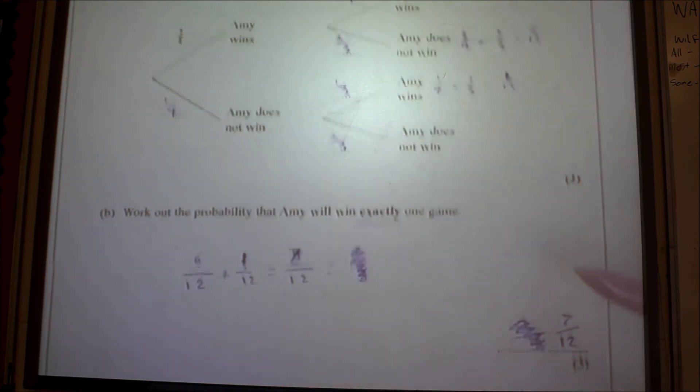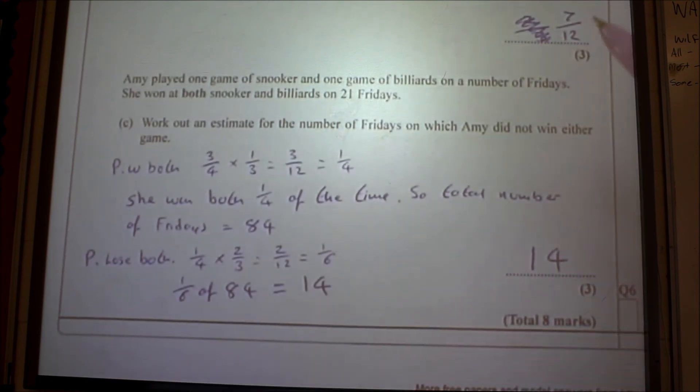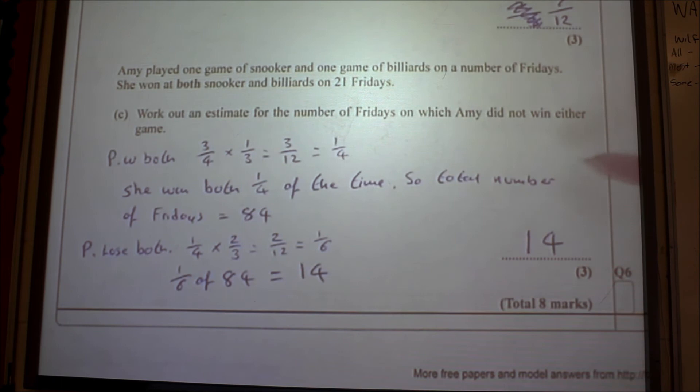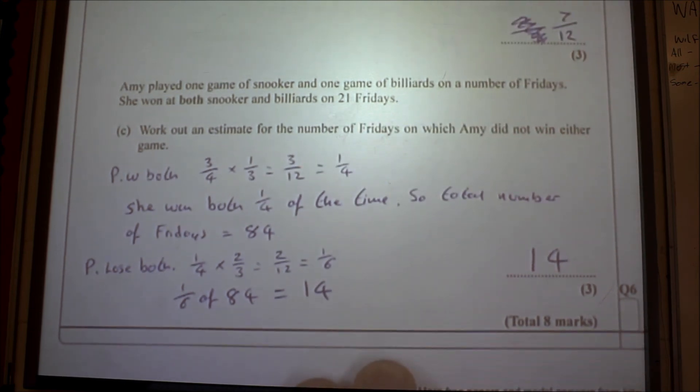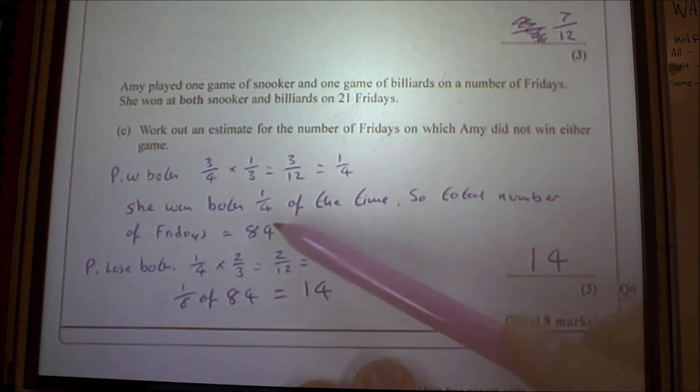Amy played one game of snooker and one game of billiards on a number of Fridays. She won at both snooker and billiards on 21 Fridays. Work out an estimate for the number of Fridays on which Amy did not win either game. The probability she won both, as you go back to the tree, is three quarters times a third, which is a quarter. She won both a quarter of the time, so the total number of Fridays must be 84, because you multiply that one by four.